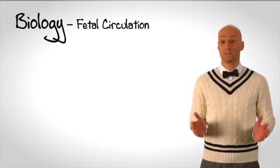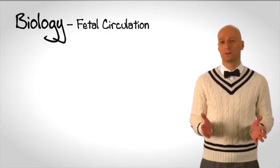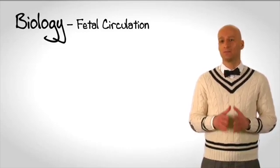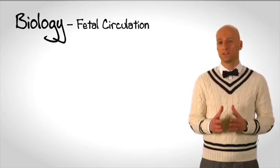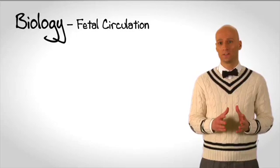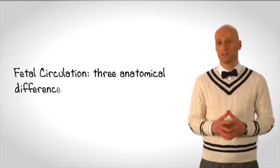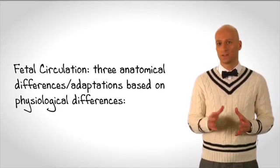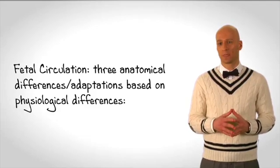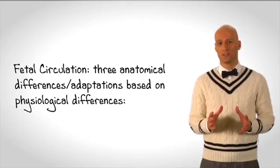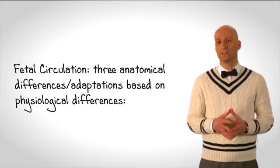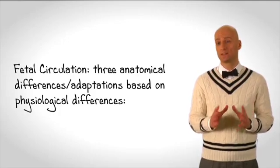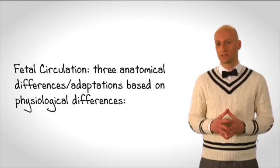Human circulation is an important topic for the Biological Science section of the MCAT. In particular, the MCAT focuses on the structural differences between fetal circulation and adult circulation. Before we talk about those structural differences, however, it's important that we understand the physiological basis for those structural differences.